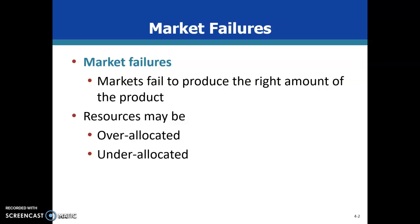A few things about market failures: market failures are when a supply and demand model is ceasing to be allocatively efficient. If we have over or under production, resources that produce that good are either over-allocated — and some of those resources could be used for something else — or they're under-allocated. Society is not getting the allocatively efficient quantity where marginal cost equals marginal benefit, and in both cases, whether over-allocation or under-allocation, we'd have deadweight loss.